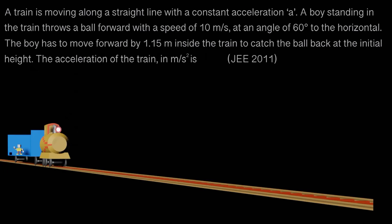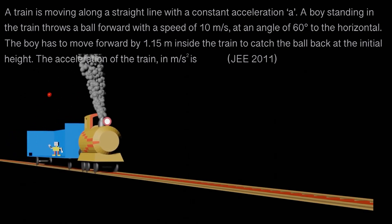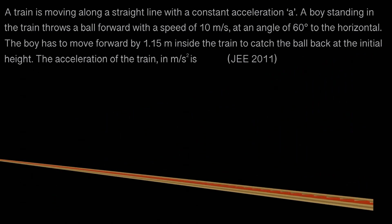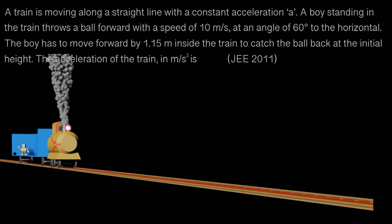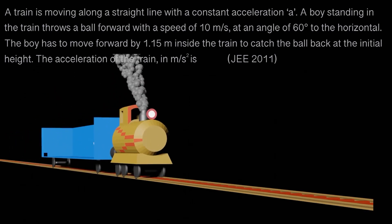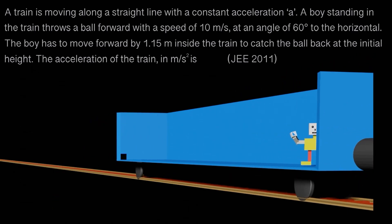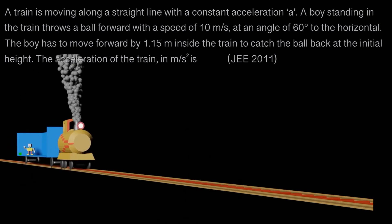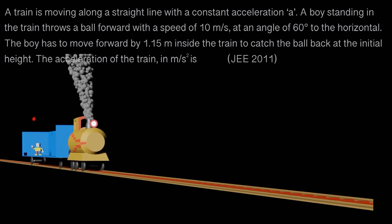So let us have a look at the schematic below. He is throwing the ball at speed 10 meters per second at an angle 60 degrees with the horizontal. The distance he moves inside the train to catch this ball again is 1.15 meters.